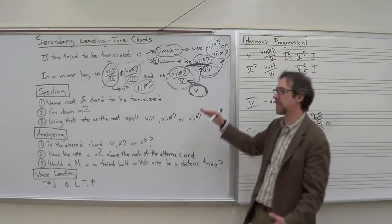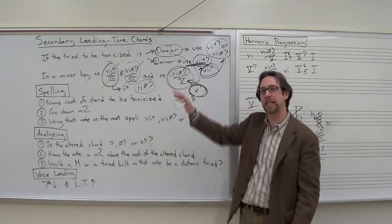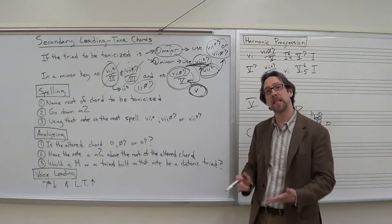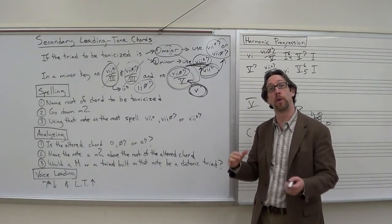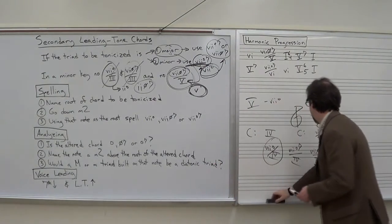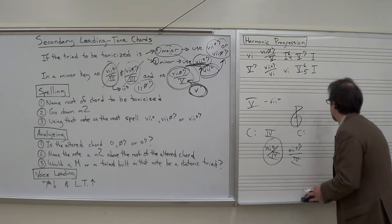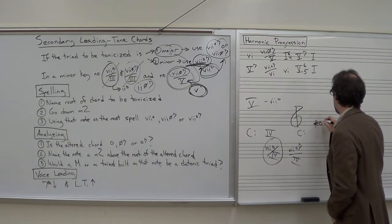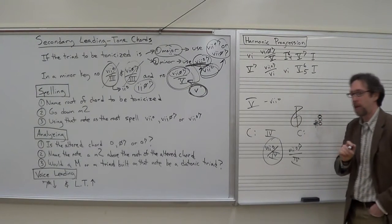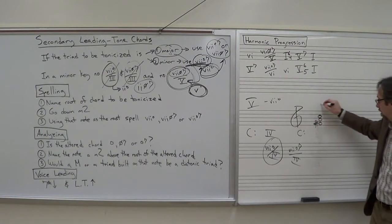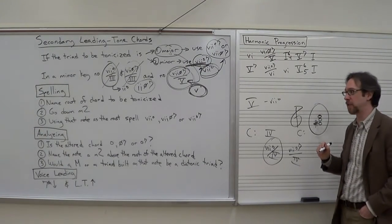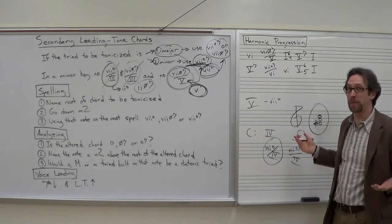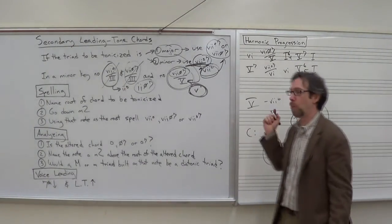That's how you're going to spell your secondary leading tone chords. Now we're using a very similar step-by-step process for when you're analyzing those chords. Let's say we see these notes right here, F sharp, A, C, in the key of C major. It's an altered chord because there is no F sharp in our key of C major. We know it's an altered chord.